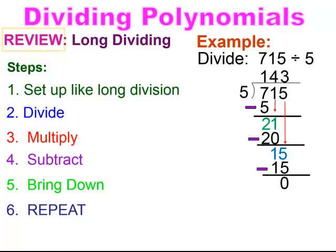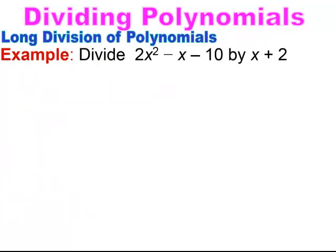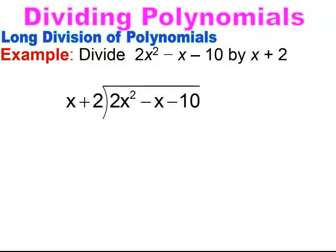Long division with polynomials is similar. So let me show you what that looks like. We're going to do long division of polynomials. I have this trinomial 2x squared minus x minus 10, being divided by the binomial x plus 2. The first thing I like to do is set it up: x plus 2 on the outside with 2x squared minus x minus 10 inside.